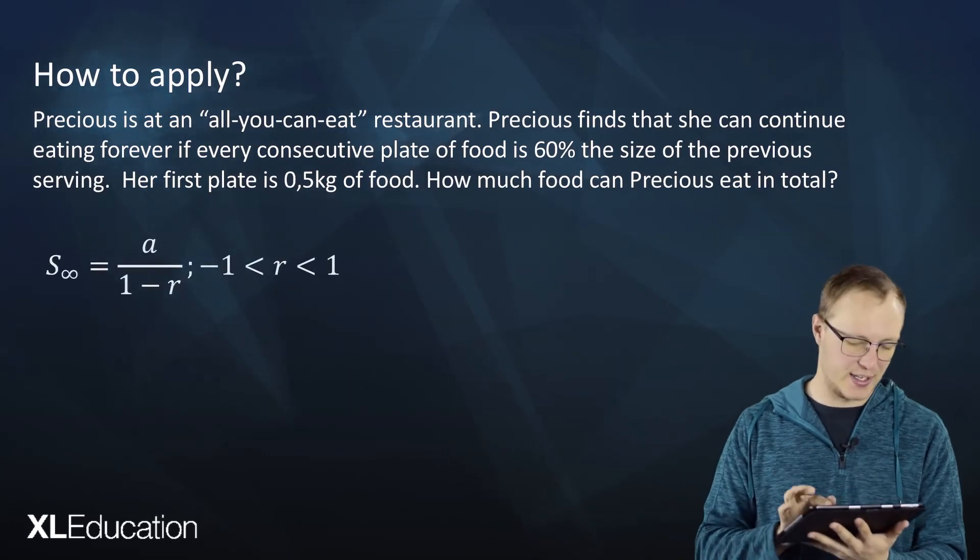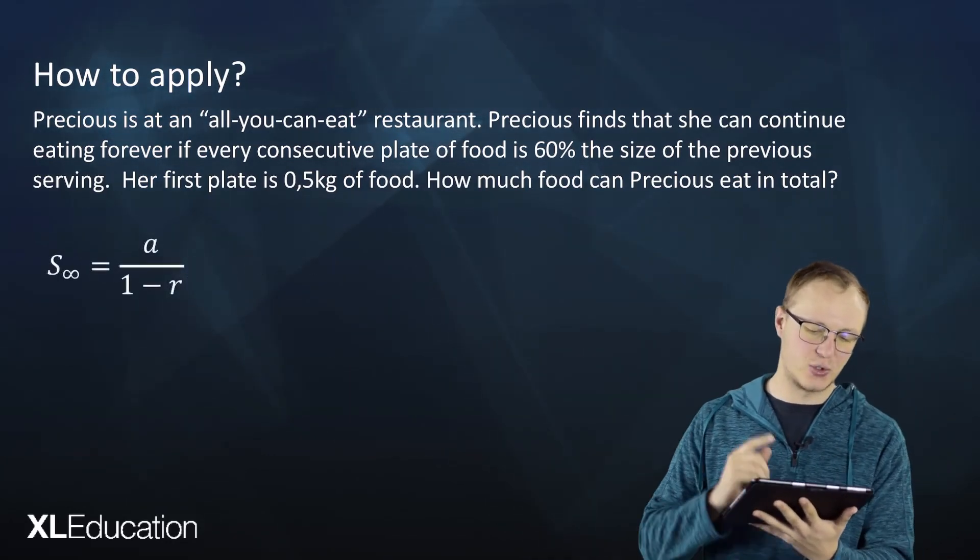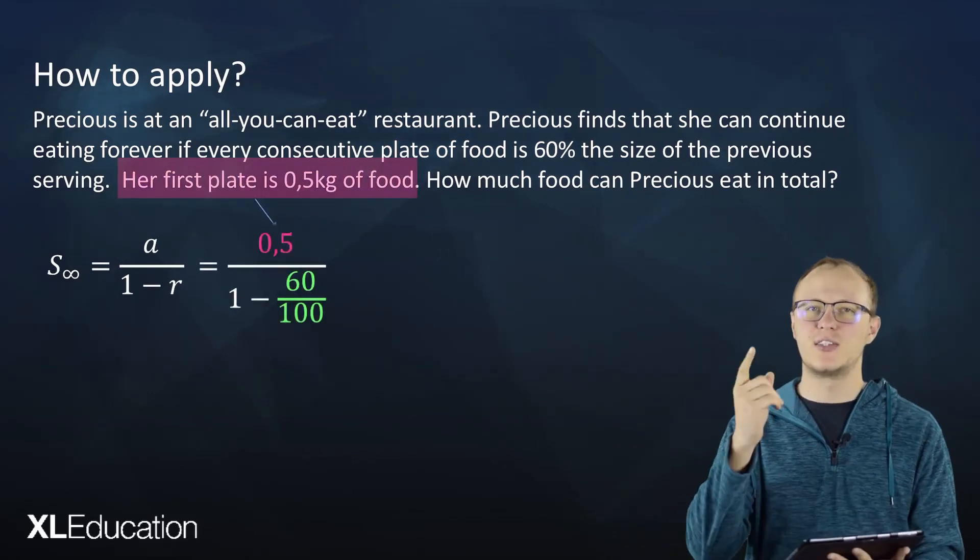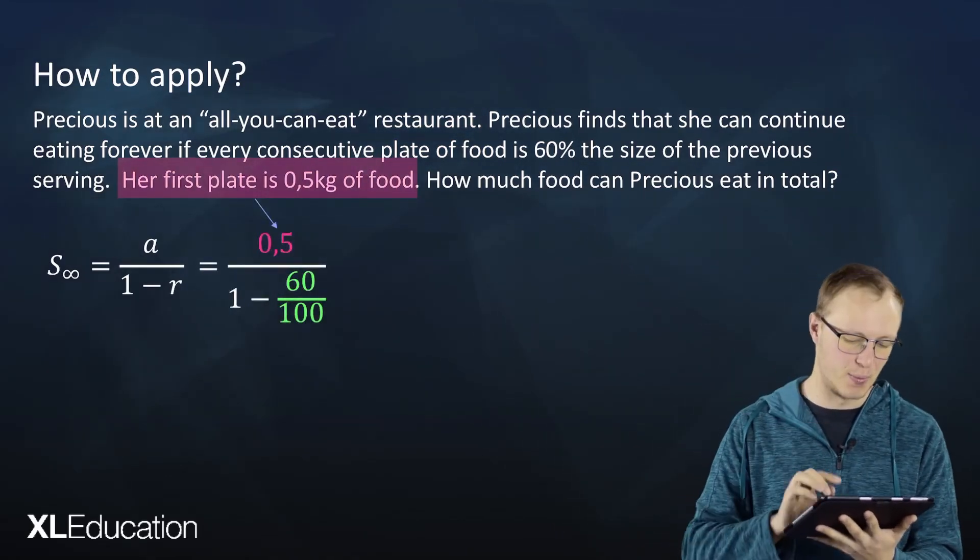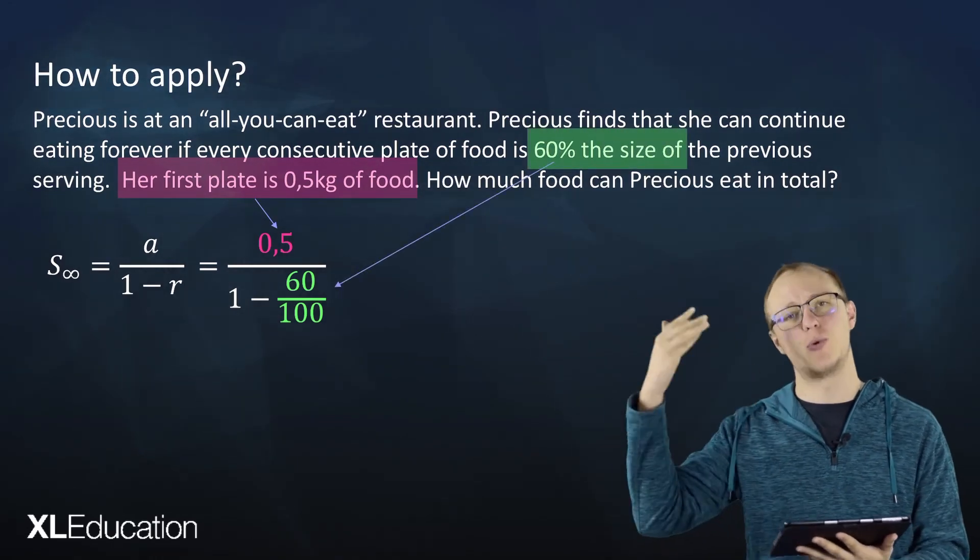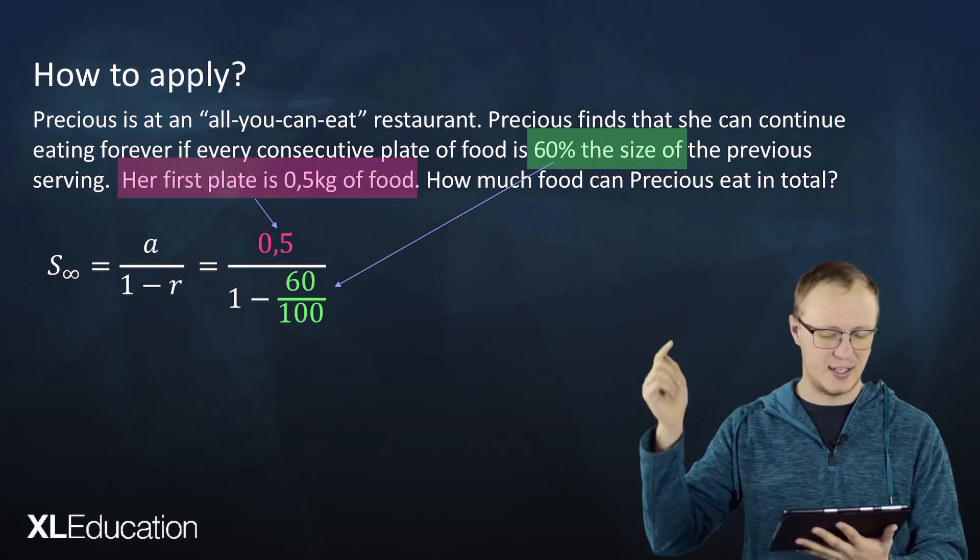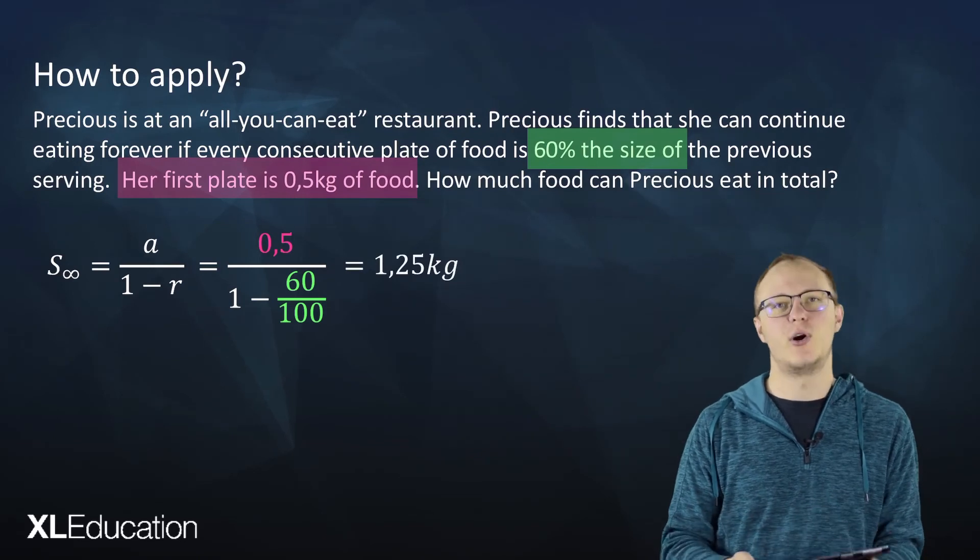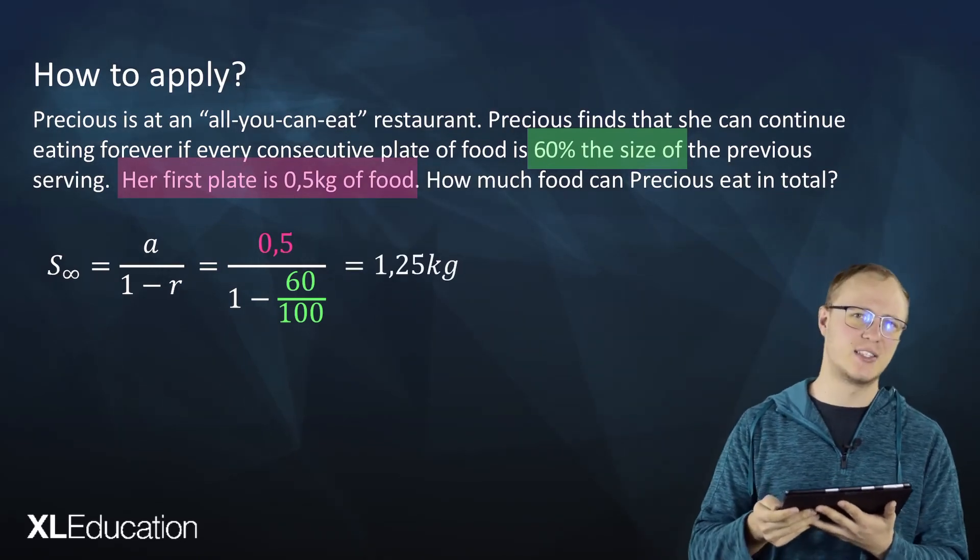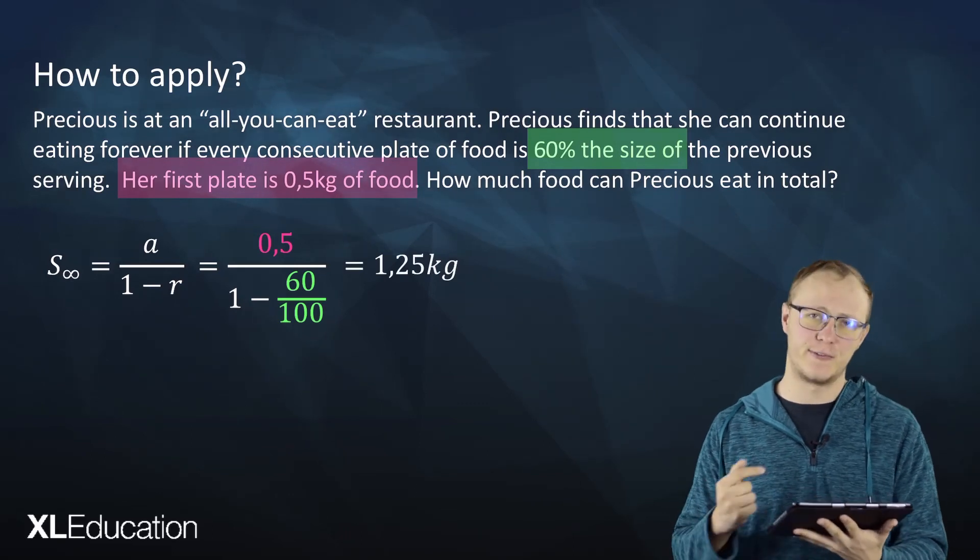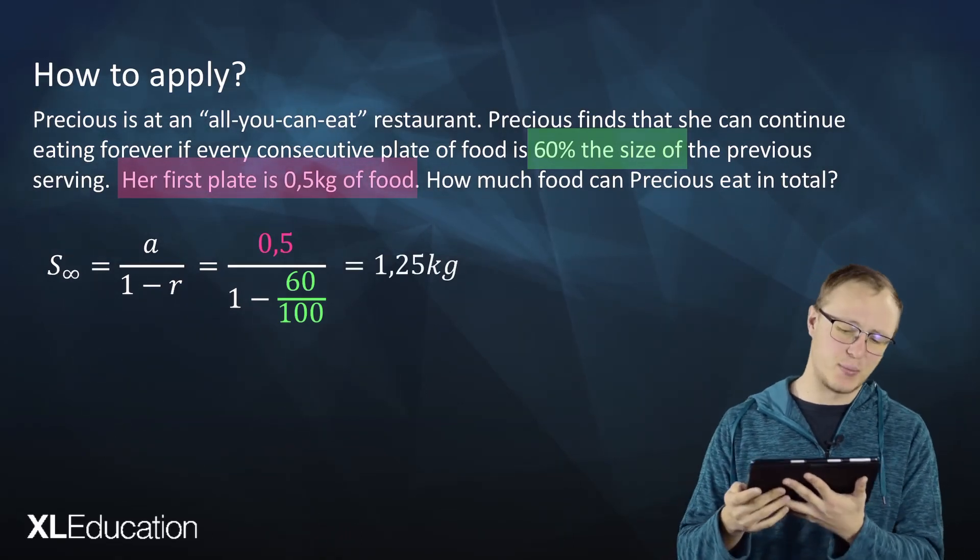Let's use our formula. We've got S infinity equals a over 1 minus r. a is 0.5, that's her first plate of food, that's term 1. r is 60 over 100, because 60% is what we multiply by to get to the next term. If you put that into your calculator, you find that Precious, despite her massive claims, only eats 1.25 kilograms of food, even though she sits at the buffet forever.